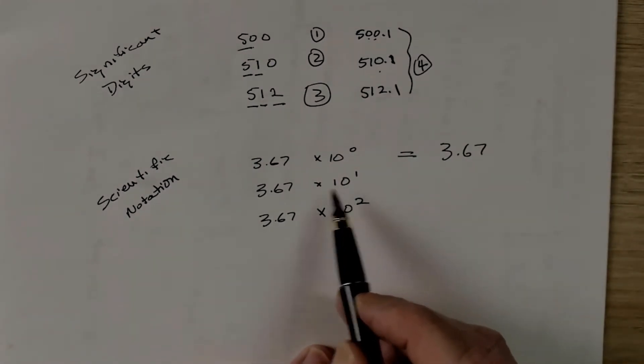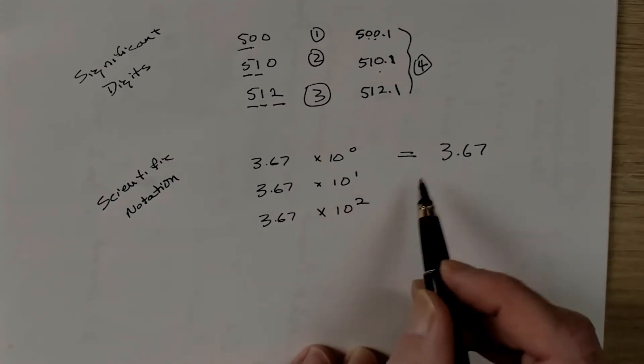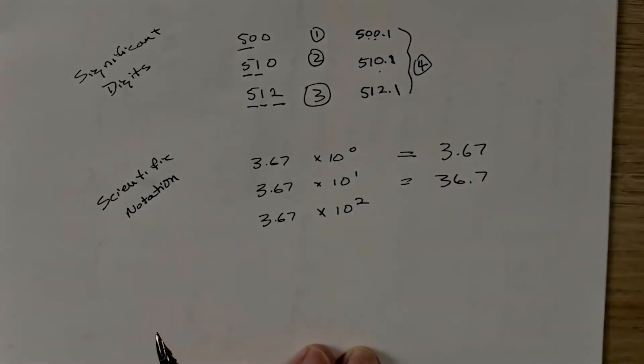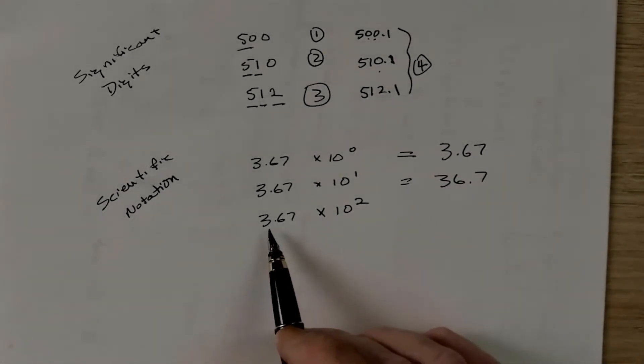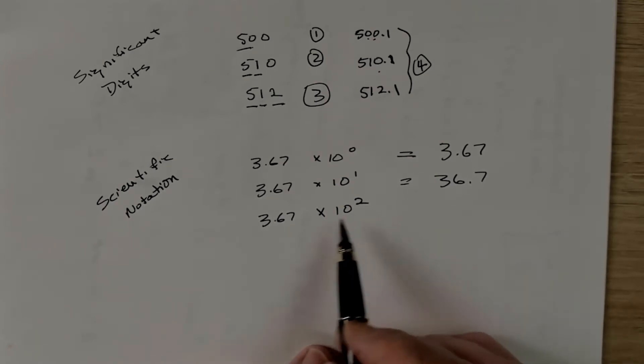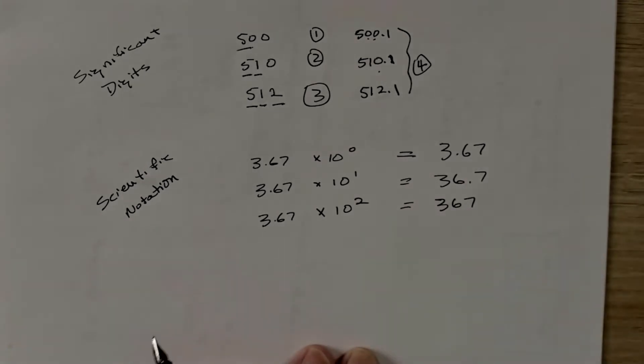10 to the 1 means that you take this number and multiply it by 10. So you would get 36.7. And finally, 10 to the 2 means that you multiply it by 100, which is 10 squared. So that would equal 367.